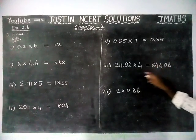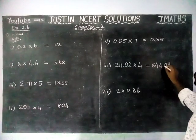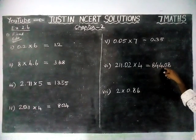So now we have to make two decimal places. From right hand side, 1, 2. So the answer is 844.08.